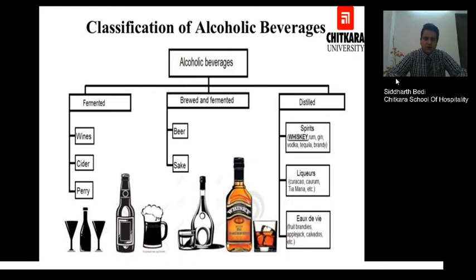The first category is fermented, which includes wines, cider and perry. Cider is made with apples and perry is made with plums. Then brewed and fermented includes beer and sake, which is made with rice in Japan. In the distilled category we have spirits — rum, gin, vodka, tequila and brandy — as well as liqueurs like Paraiso, Cointreau, and fruit brandies like Applejack and Calvados, which are made in various parts of Europe.